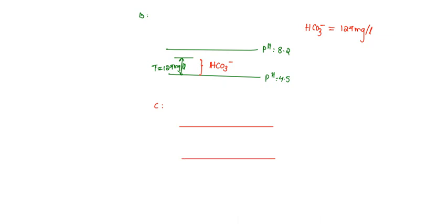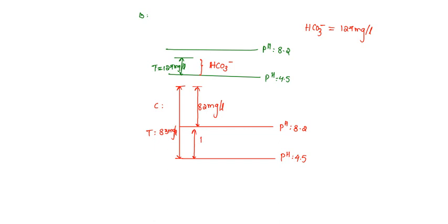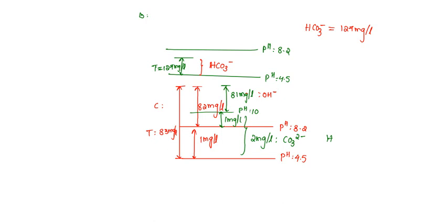For sample C, between pH 8.2 and pH 4.5, total alkalinity is 83 mg per litre and phenolphthalein alkalinity is 82 mg per litre. The remaining 1 mg per litre is divided again, giving 1 mg per litre on one side and the remaining 81 mg per litre above pH 10. So the 81 mg per litre will be OH⁻ alkalinity, the total sum of 2 mg per litre will be carbonate alkalinity, and bicarbonate alkalinity is 0.